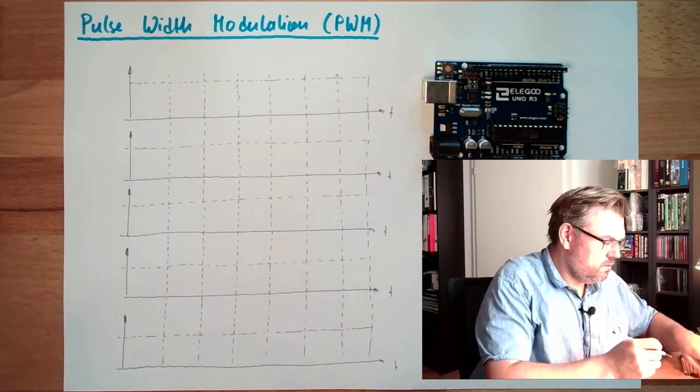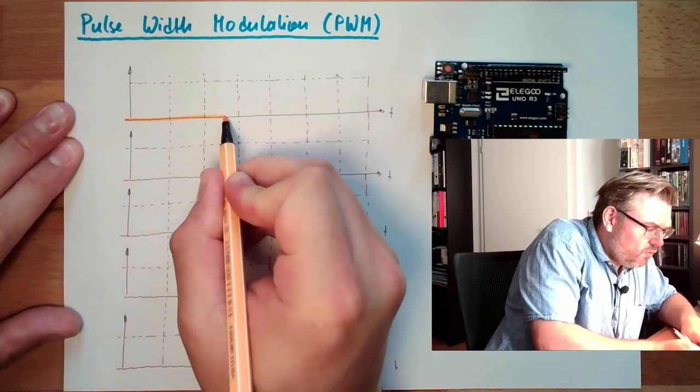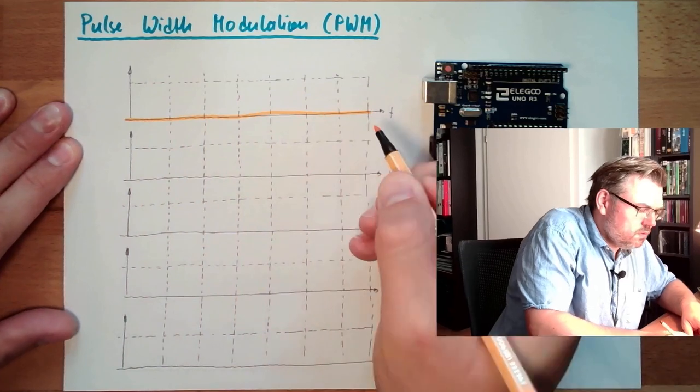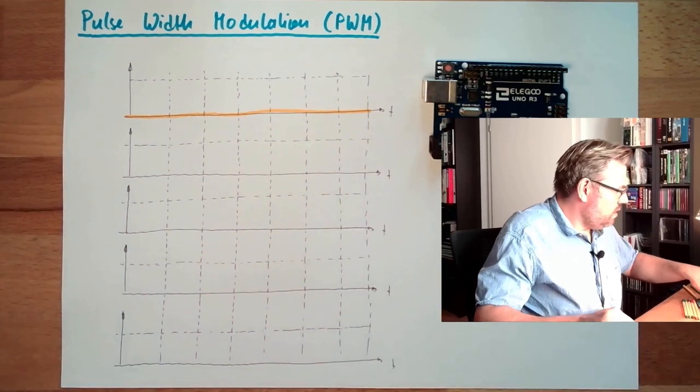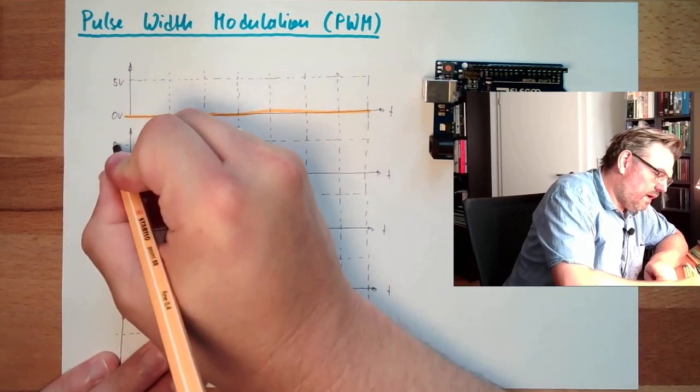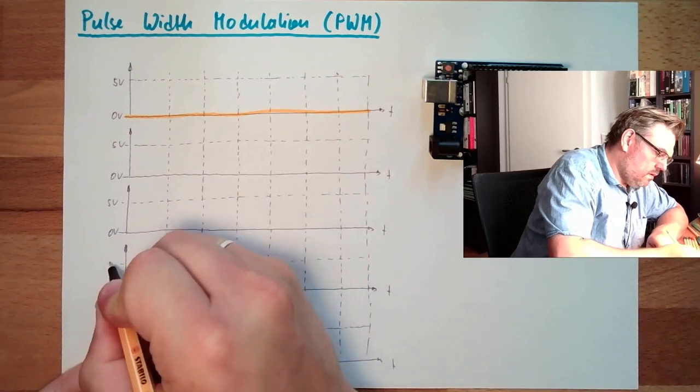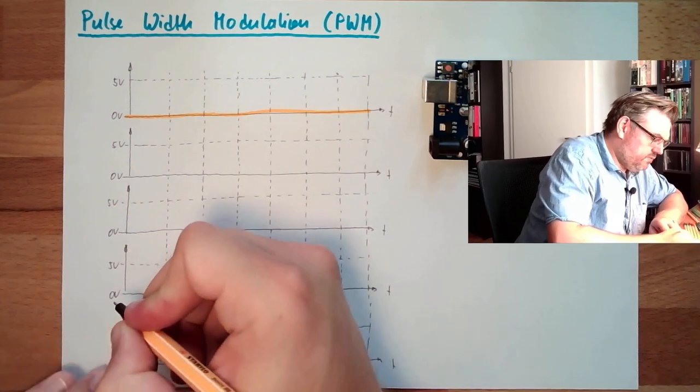So here, all the time off, zero volt. So here we have five volts in our Arduino. Here we have zero volts every time.